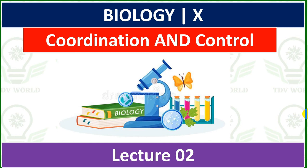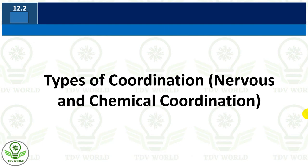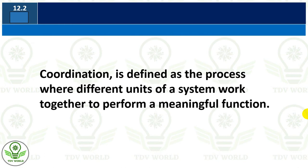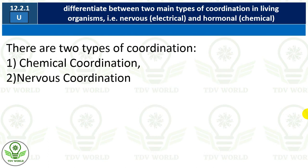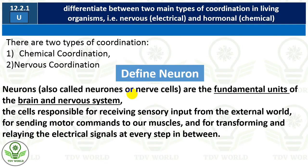Bismillahirrahmanirrahim, Assalamualaikum. Welcome to lecture two on Coordination and Control in Biology. The first SLO on the importance of coordination was completed in lecture one. This is lecture two, and we will begin with the types of coordination — nervous coordination and chemical coordination.